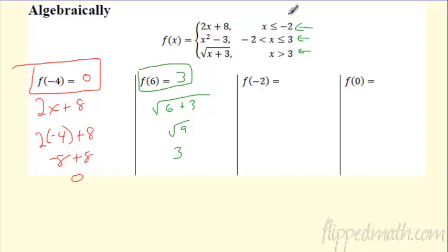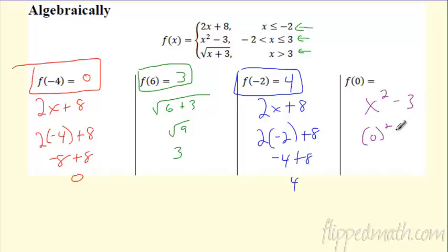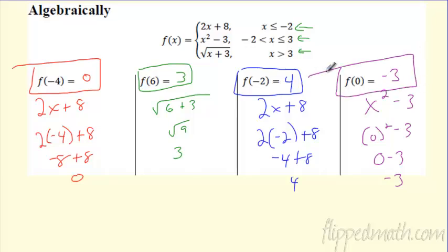Can I do negative two? Negative two is tricky because here it's in x less than or equal to negative two, and this is x bigger than negative two. So it actually falls into that top one — two x plus eight — because that's where it's equal to. The bar underneath means it falls in there. Two times negative two is negative four, plus eight is four. And last: plug zero in — zero is between negative two and three, so it's in the middle function, x squared minus three. Squaring zero is zero, subtract three, you get negative three.